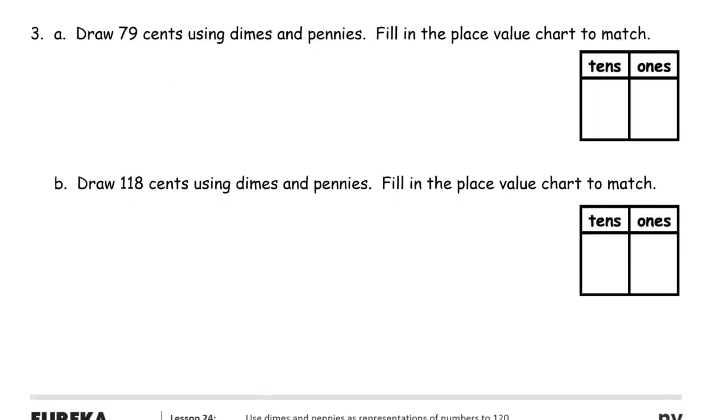Draw 79 cents using dimes and pennies. Fill in the place value chart to match. So we're not going to draw pictures of what's on the backs and fronts of the coins. We're just going to write the values of the coins in circles. That's how we usually draw coins. Using dimes and pennies only, we need the place value chart. It's going to be 79, right? So it might be easier to start with the place value chart. It tells us how many 10s and how many 1s we need. We need 7 10s, so that's 7 dimes. And this is how you draw the dimes.